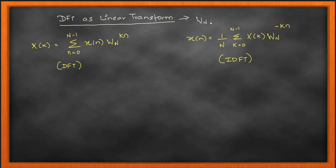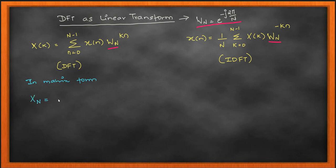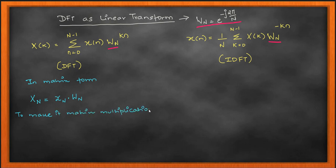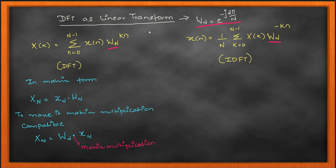As a recap from the previous class, I showed you how to use DFT as a linear transform. Now I'm going to take W_N, which is the substitution for e to the power of minus j 2π/N, and write this in matrix form. Representing DFT in matrix form is a much simpler way to do the computation, since solving matrix multiplications is considered less complex than solving linear systems of equations.